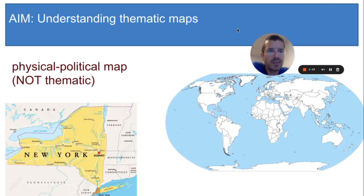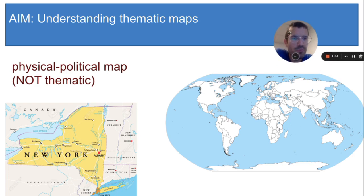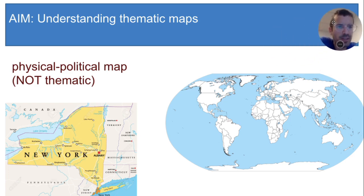The next term is a thematic map. And before I show you the definition, let's look at a non-thematic map first. I bet when you think about a map, you think of something like this one, or this one.